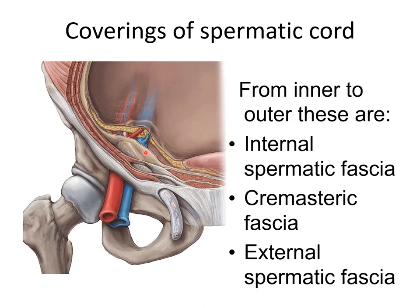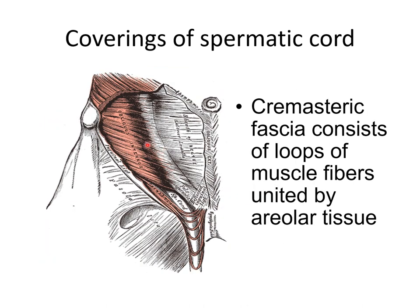From inner to outer, the three coverings of the Spermatic Cord are: internal spermatic fascia, cremasteric fascia, and external spermatic fascia. In this diagram, you can clearly see the internal oblique muscle which forms the boundaries of the inguinal canal, and the Spermatic Cord traversing the inguinal canal deriving the cremasteric fascia from the internal oblique muscle. The cremasteric fascia consists of loops of muscle fibers united by areolar tissue, also derived from the internal oblique muscle, and is responsible for the cremasteric reflex.